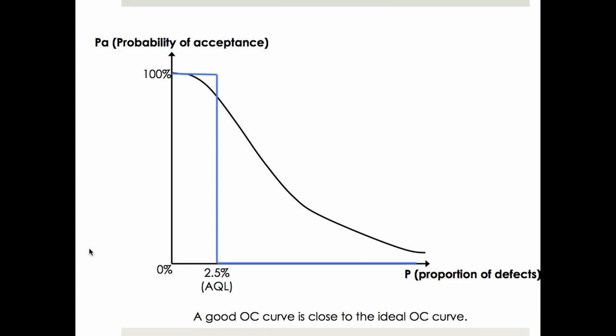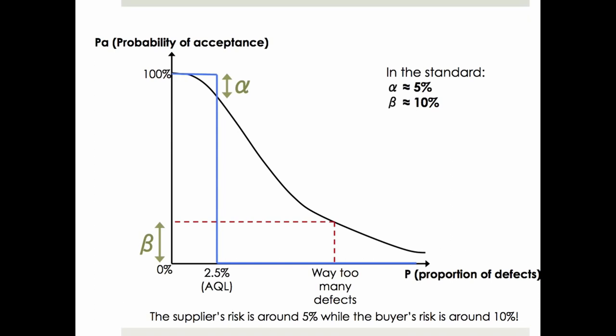So we want a curve that gets as close to that ideal as possible. What the standard looks at when deciding the shape of that curve is the two risks we mentioned: the alpha risk and the beta risk — the supplier's risk and the buyer's risk. One very important thing to know is that the standard sets the alpha risk at about 5% and the beta risk at about 10%. So the supplier's risk is rather small, but the buyer's risk is about double the supplier's risk. That's why we say the standard is more favorable to the supplier.